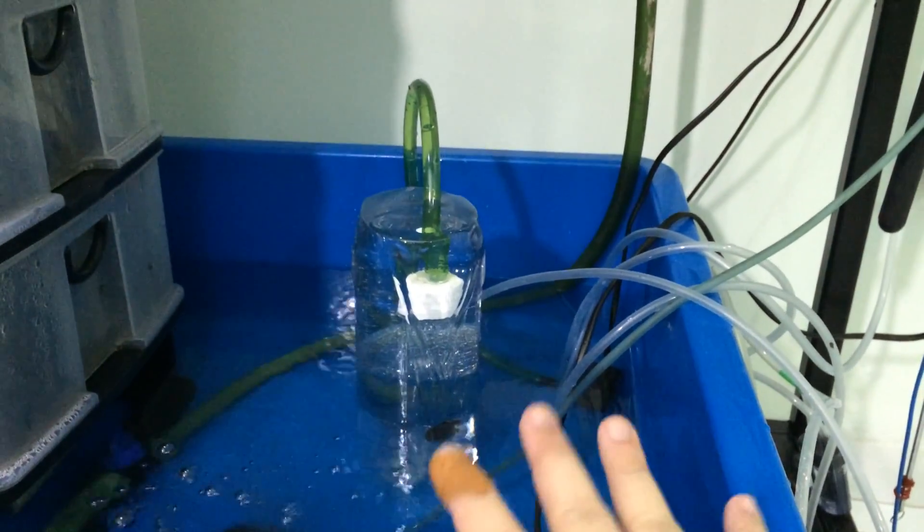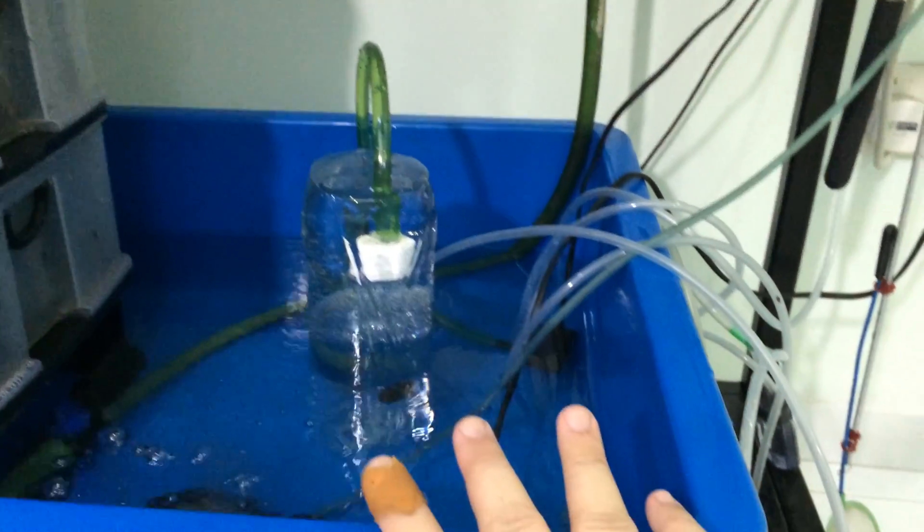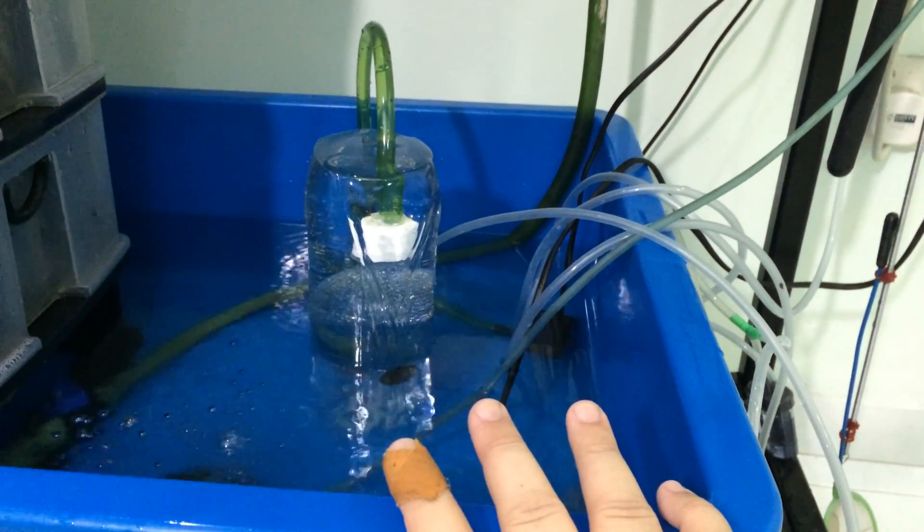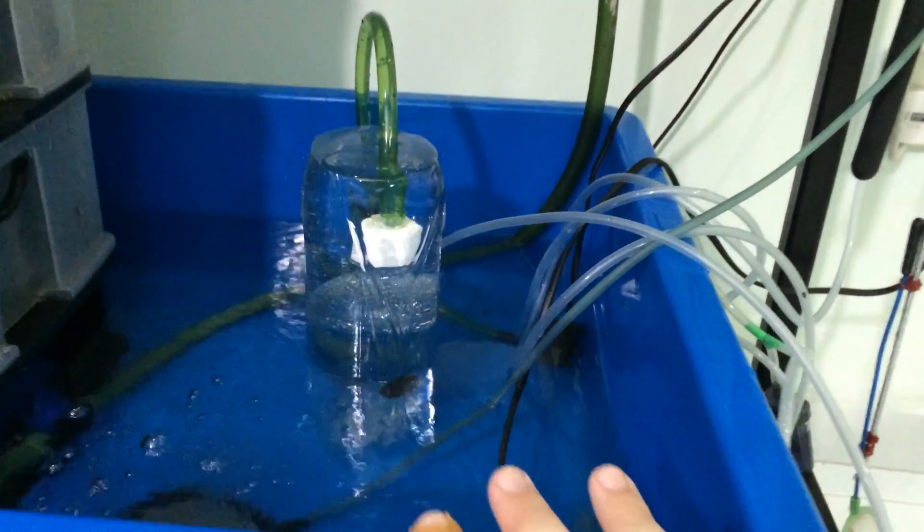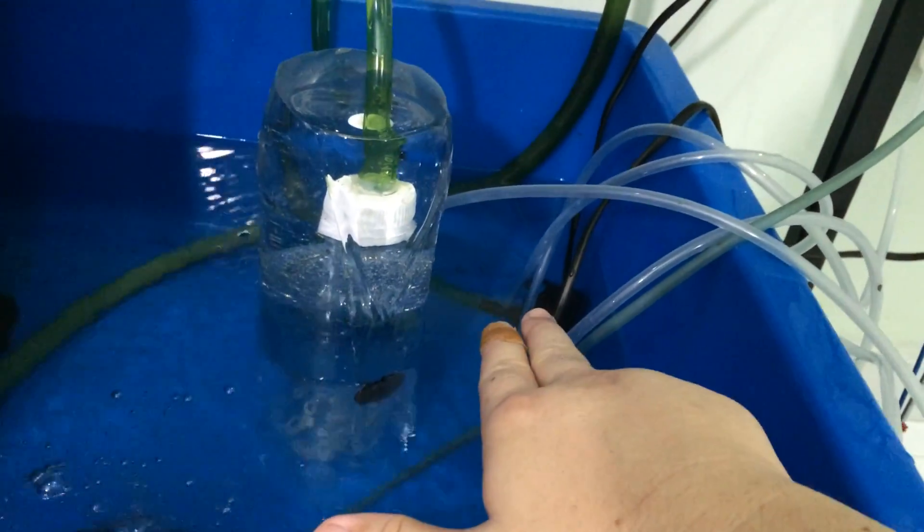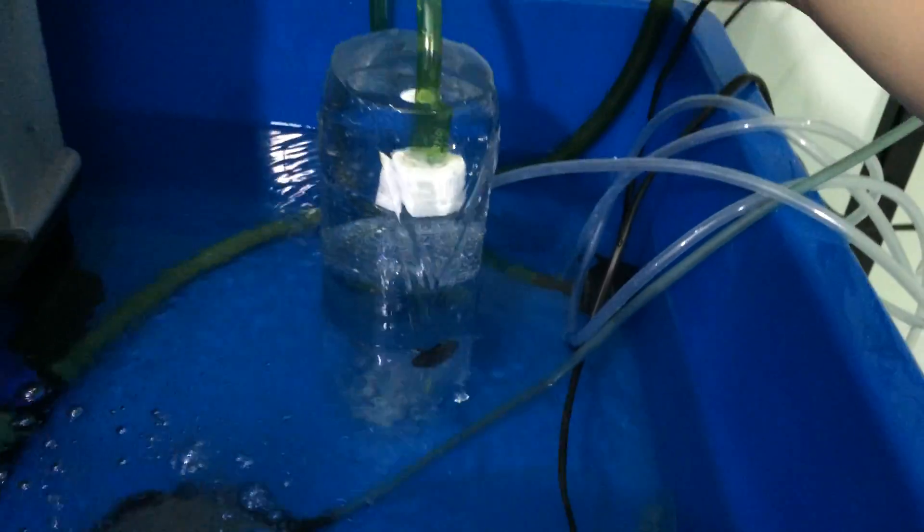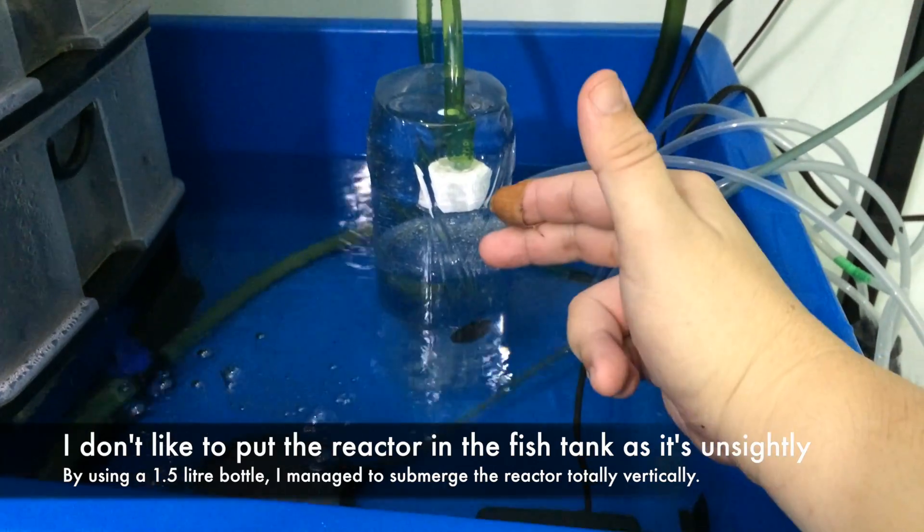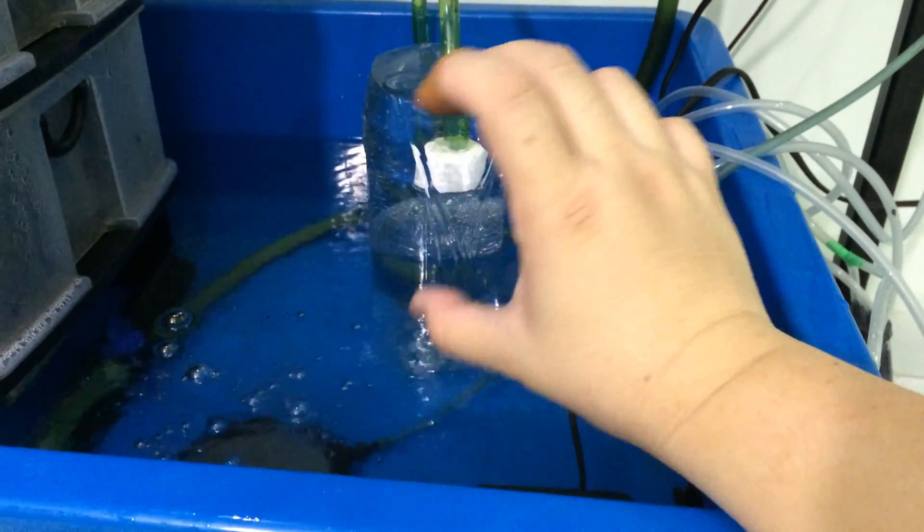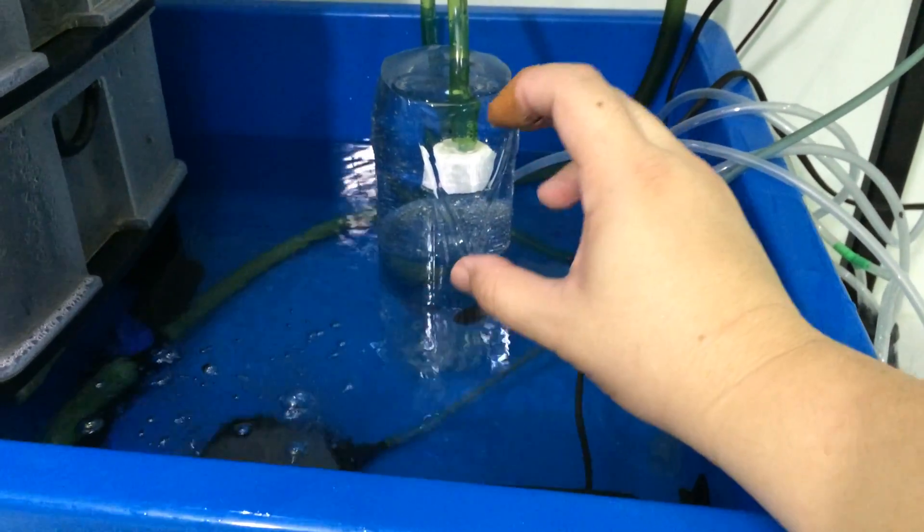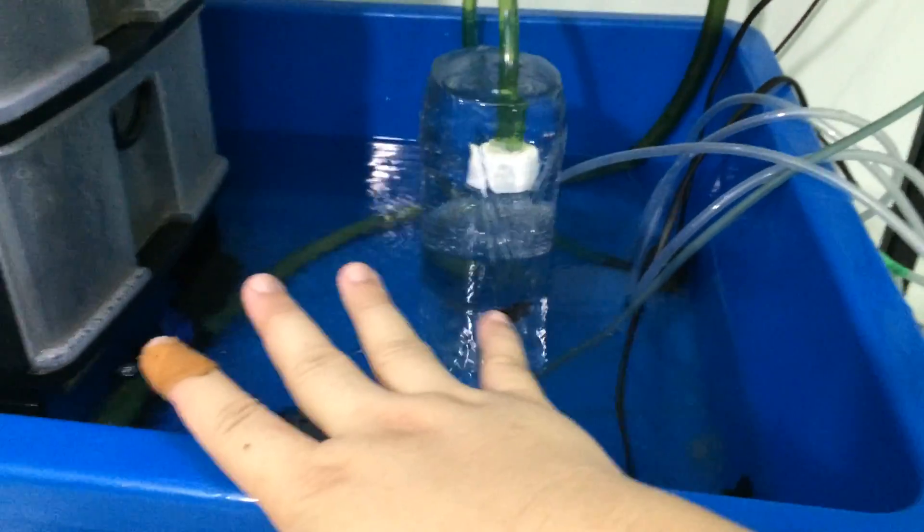The first idea is using a submersible pump to pump CO2 into a reactor. However, because the reactor is too tall, I cannot place it directly into the sump, so I need to put it into a separate medium, which is another 1.5 liter plastic bottle.